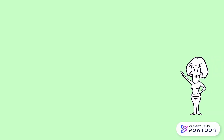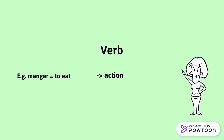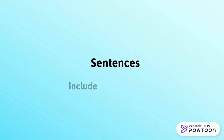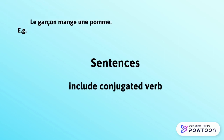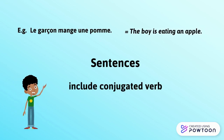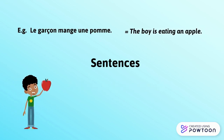In a sentence, the verb expresses an action — for instance, manger, to eat — or sometimes a state, être, to be. All sentences must include a conjugated verb. For example, Le garçon mange une pomme. The boy is eating an apple.